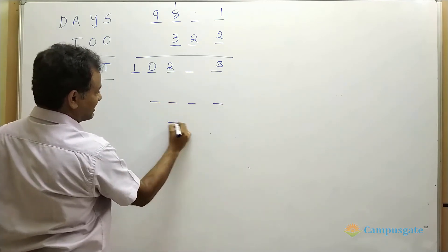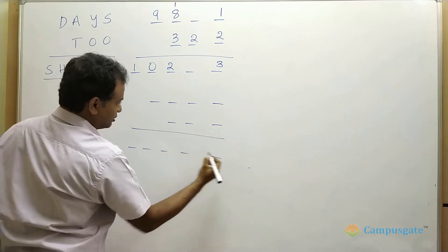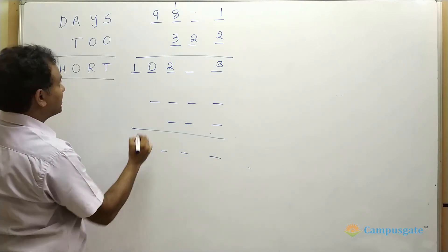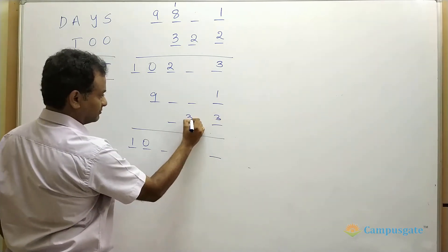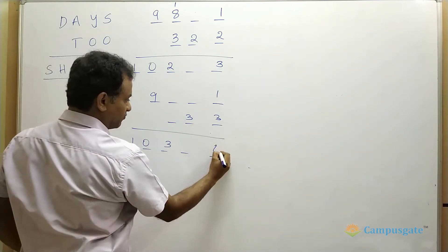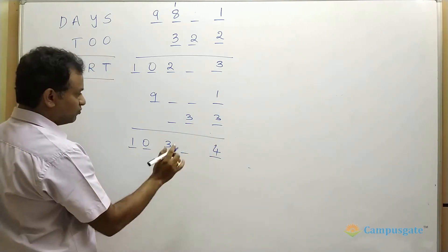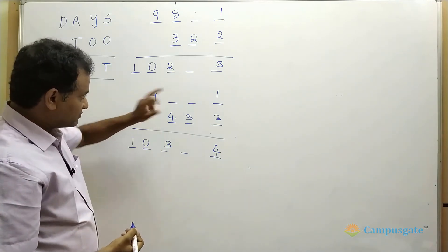So again we will proceed further. We will take a different template and let us see where you are getting the answer. So first we substitute all the known numbers here. Now put 3 value here. If you put values of 3 here, 1 plus 3 equals 4, that means T immediately equals 4. So we will put 4 here.